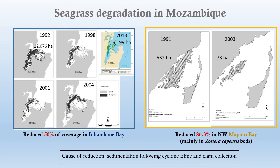These two studies, among Maputo and Bandeira and colleagues, clearly show the change in seagrass cover around Inhambane and Maputo Bays. In Inhambane Bay, in 1992, seagrass covered an area of 12,000 hectares, and after 21 years, in 2013, seagrass covered only 6,000 hectares. In Maputo Bay, seagrass covered an area of 532 hectares, and by 2003, the area of seagrass had reduced to 73 hectares. Sedimentation following cyclone and human exploitation were pointed out as the major causes of this reduction.